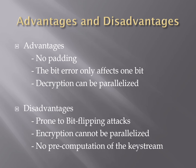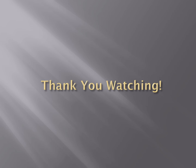But with advantages come disadvantages. CFB is prone to bit-flipping attacks. A bit-flipping attack is an attack on a cryptographic cipher in which the attacker can change the cipher text in such a way as to result in a predictable change of the plaintext, although the attacker is not able to learn the plaintext itself. Besides that, encryption cannot be parallelized, and there is no pre-computation of the key stream. That is all, thank you for watching.